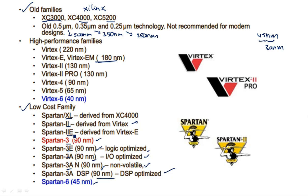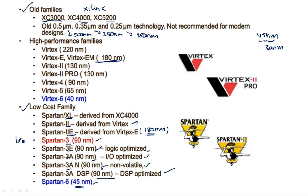We have started from Spartan IIe derived from Vertex E, which has 180 nanometer technology. From 180 nanometers, we have now moved up to 45 nanometer technology — that means the value has reduced to almost one quarter of the starting value: 180 divided by 4 equals 45. These are low-cost families which are used for laboratory purpose.